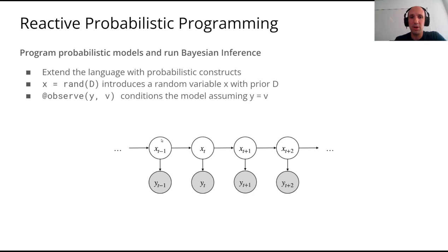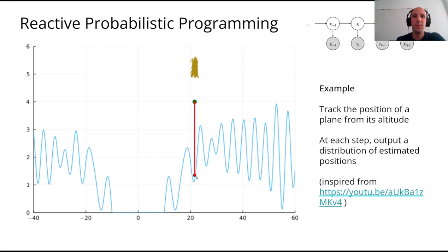A typical example in this framework is the so-called hidden Markov model, where you have a hidden state X evolving as a Markov chain — X(t) depends on X(t-1) and X(t+1) depends on X(t) and so on. But you do not have access to this hidden state. You only have access to Y(t), the observation, and Y(t) is a possibly random function of X(t).